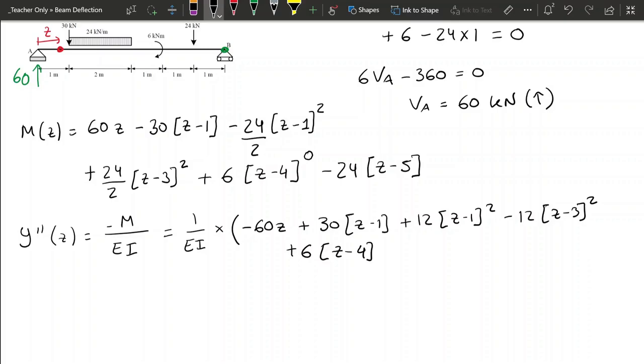z minus 4 to the power of 0, and that's not plus 6, it's minus, and then finally, plus 24, z minus 5. And here I can close the brackets that I started at the 1 over EI.